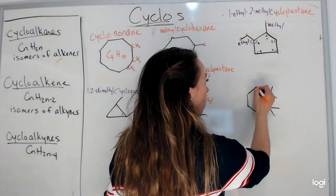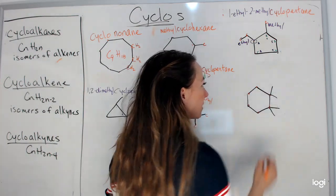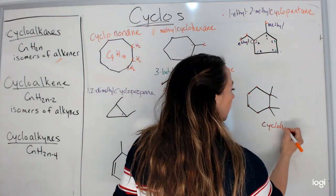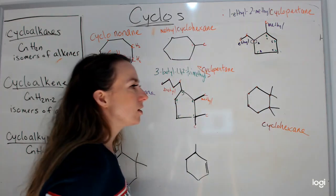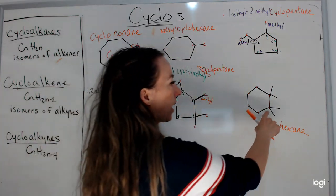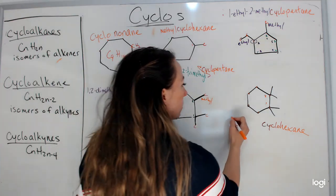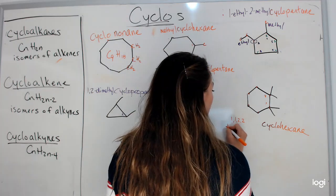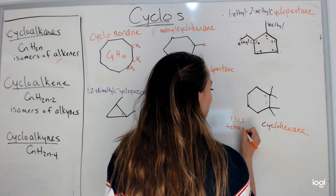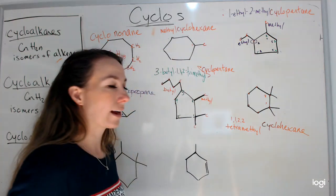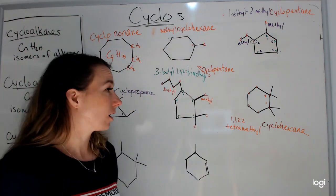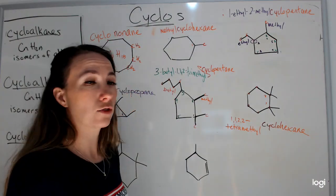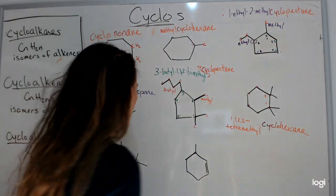This one has 6 carbons in a circle — cyclohexane, all singly bonded. I have branches on carbons 1, 1, 2, and 2 — four methyl groups total — so this is 1,1,2,2-tetramethylcyclohexane.